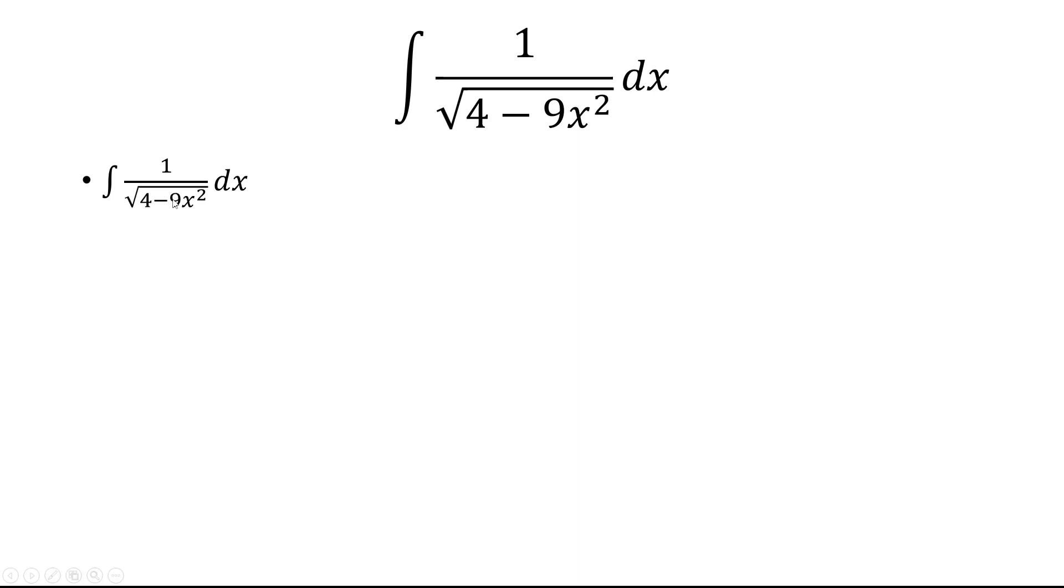The goal here is to get this in the form of 1 over the square root of 1 minus u squared. And in order to do that, we first have to factor out the 4.